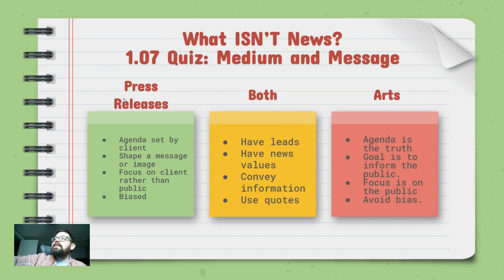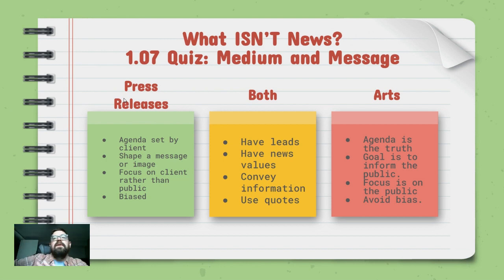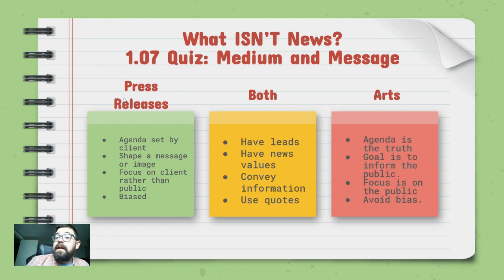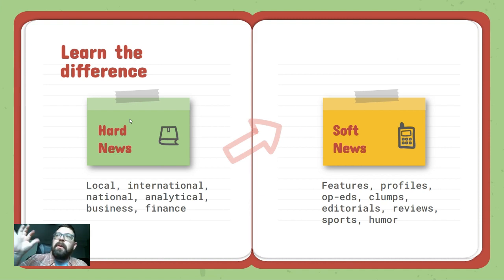Journalism, by contrast, has an agenda toward the truth — the goal is to inform the public, the focus is on the public, and we avoid bias. Both press releases and journalism have leads, news values, convey information, and include quotes — there's a weird mix between the two. The key question is: is what you're reading biased toward a company or organization, or is it avoiding that bias?